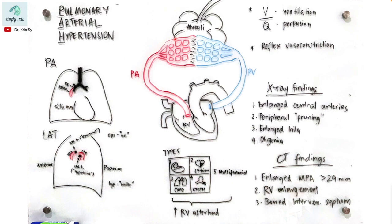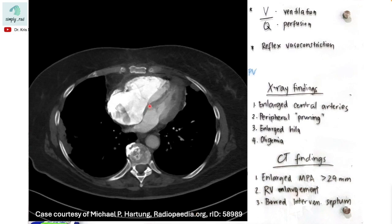Another reason for narrowed arterioles in COPD is chronic inflammation, which causes arteriolar remodeling. This all increases right ventricular afterload. In this example, we can see the right heart is enlarged — the right ventricle is already larger than the left ventricle, and the interventricular septum is bowed toward the left ventricle. Aside from an enlarged pulmonary artery, look for signs of right ventricular strain.